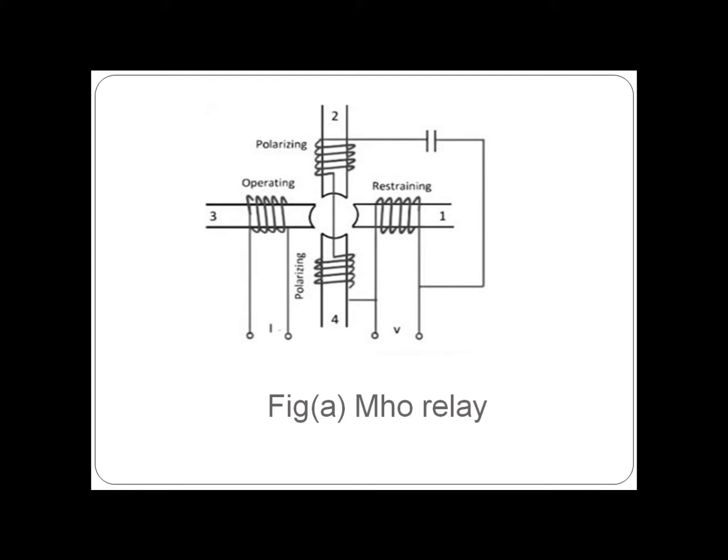The interaction of fluxes due to poles 2, 3, and 4 produces operating torque, and due to poles 1, 2, and 4, controlling or restraining torque is obtained. The 1-2-4 pole produces restraining torque; the 2-3-4 produces operating torque. A series capacitor is connected to provide memory function.